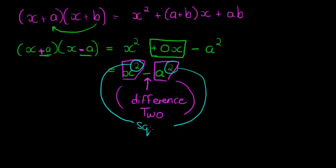This is called the difference of two squares, difference because it's subtracted, two because there's two terms, and squares because both of those terms are squared.